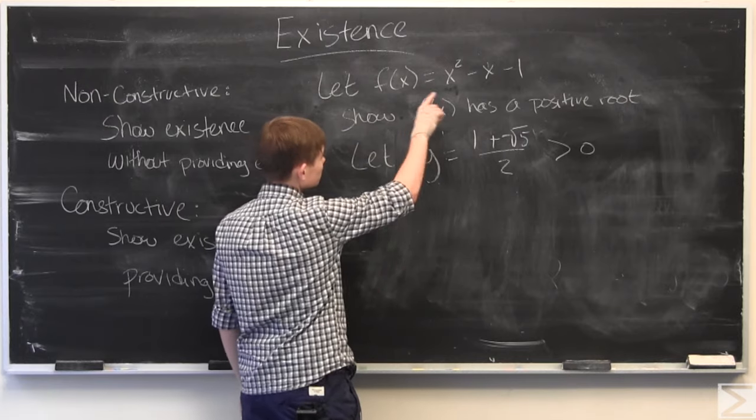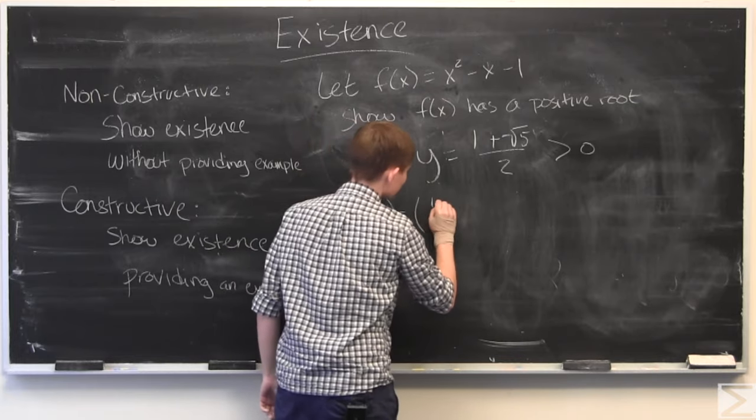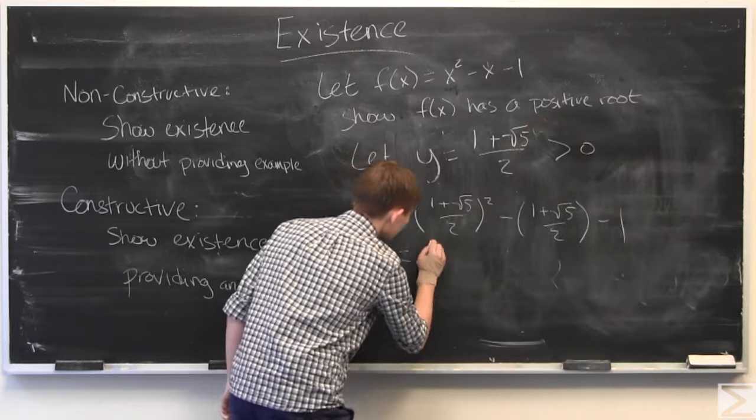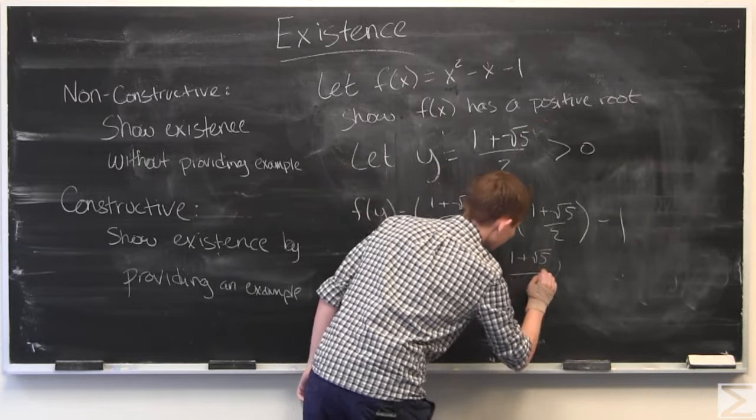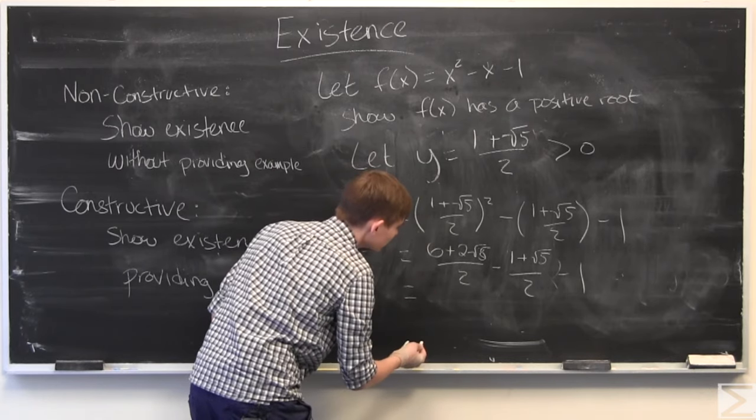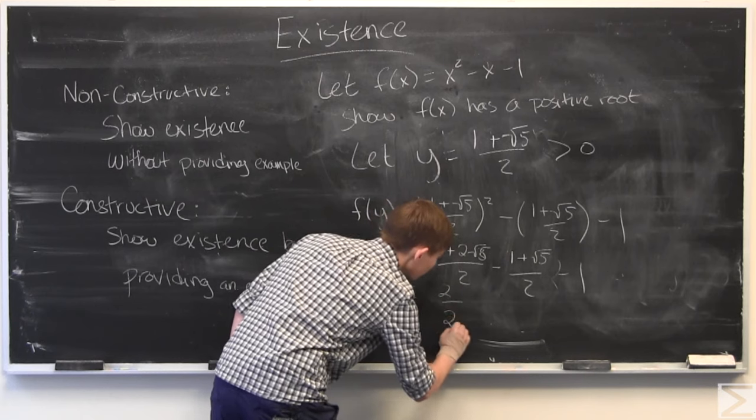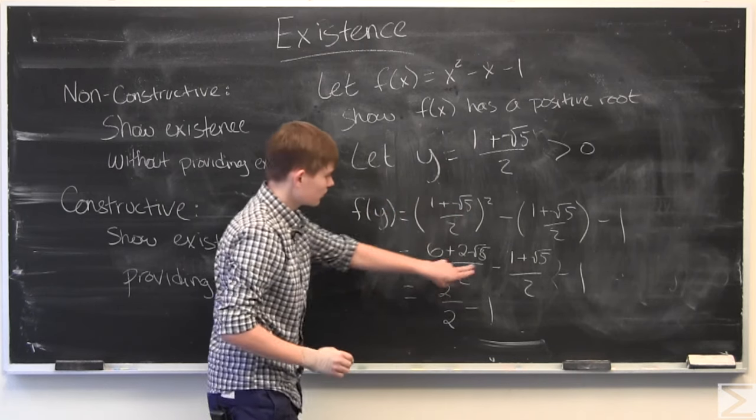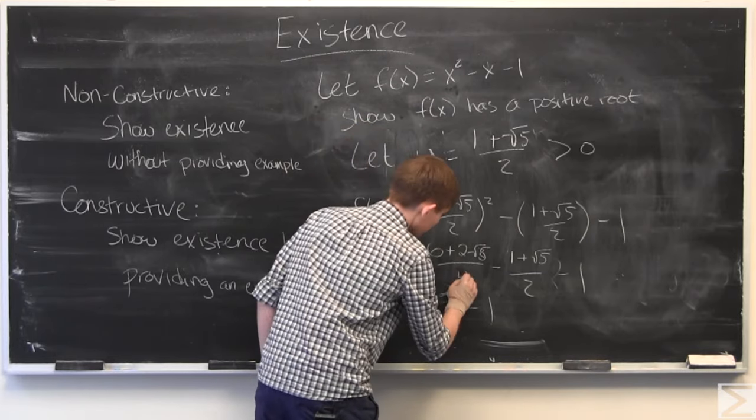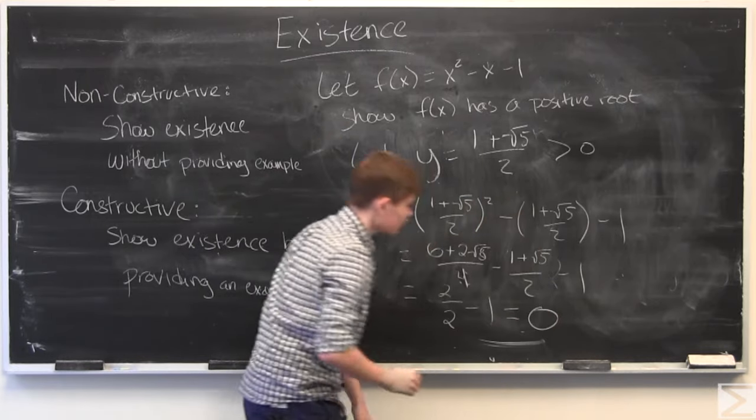Then we just plug it in. So f(y) is, we simplify, and then we'll simplify again, and we get 2 over 2 minus 1. This is over 4. Now it will simplify to 2 over 2, and we get 0.